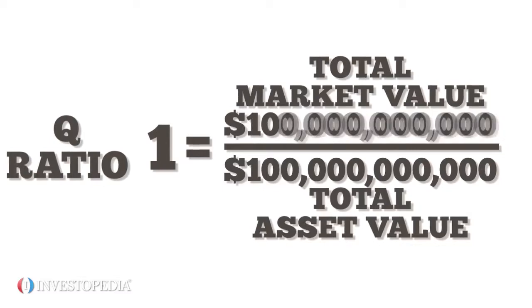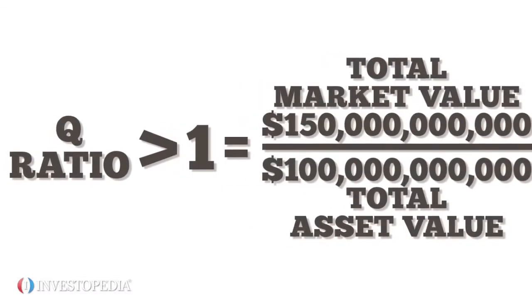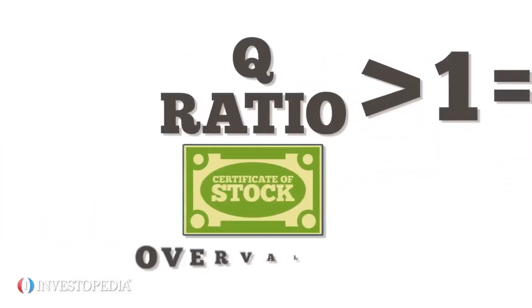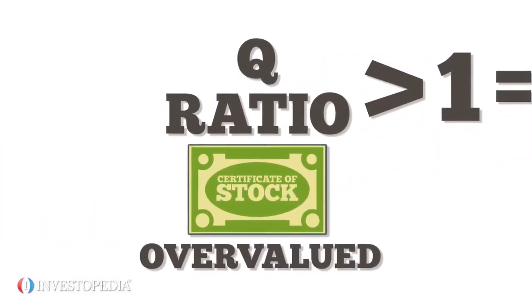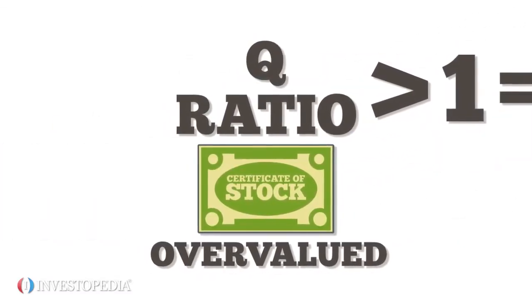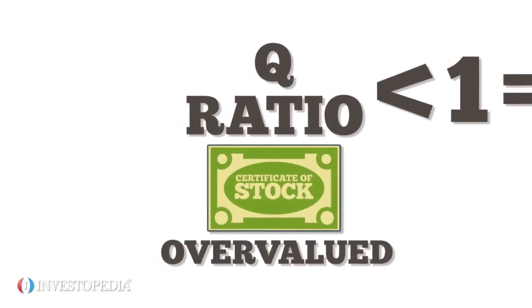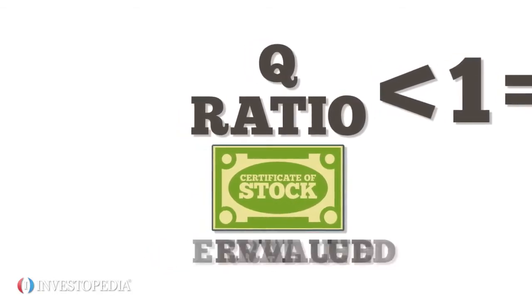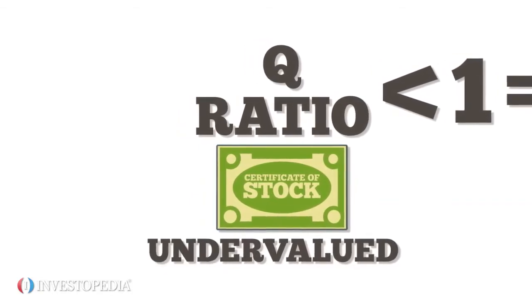A Q-Ratio above 1 means the market is overvalued and stocks might not be the best investment. A Q-Ratio below 1 means the market is undervalued.